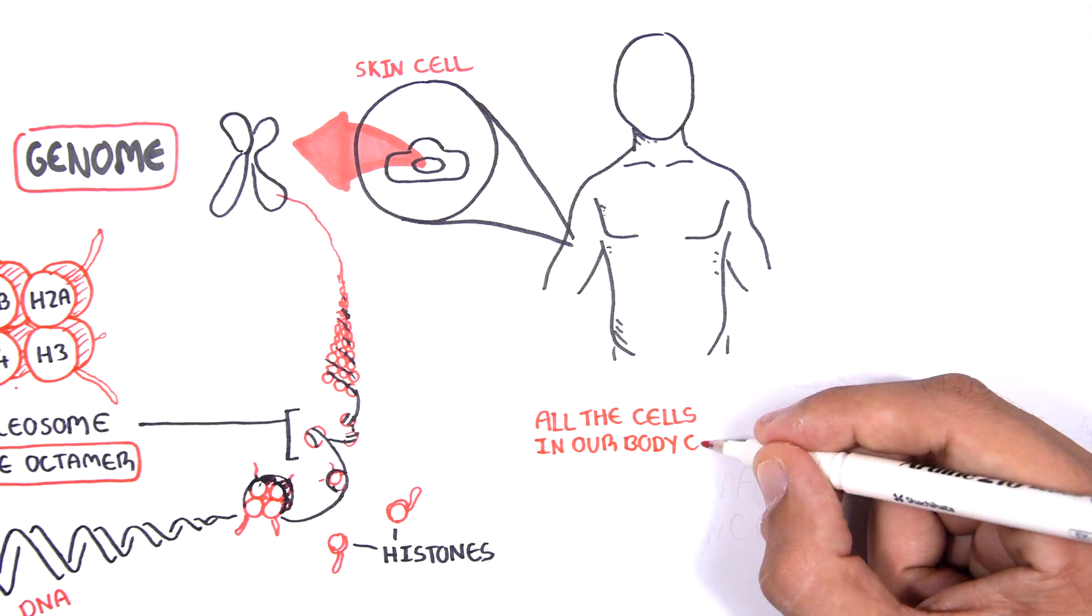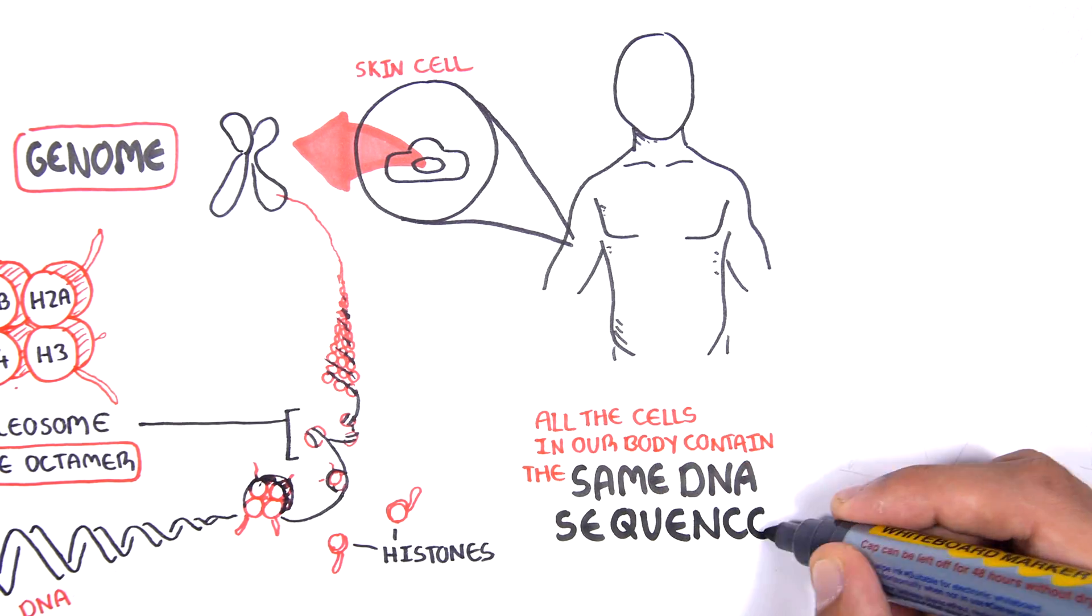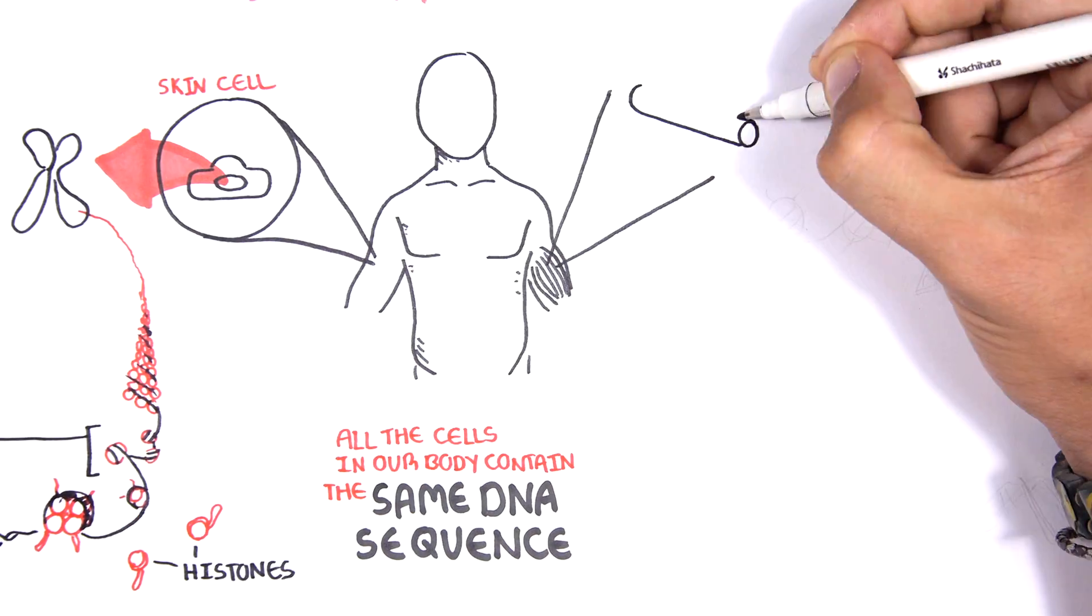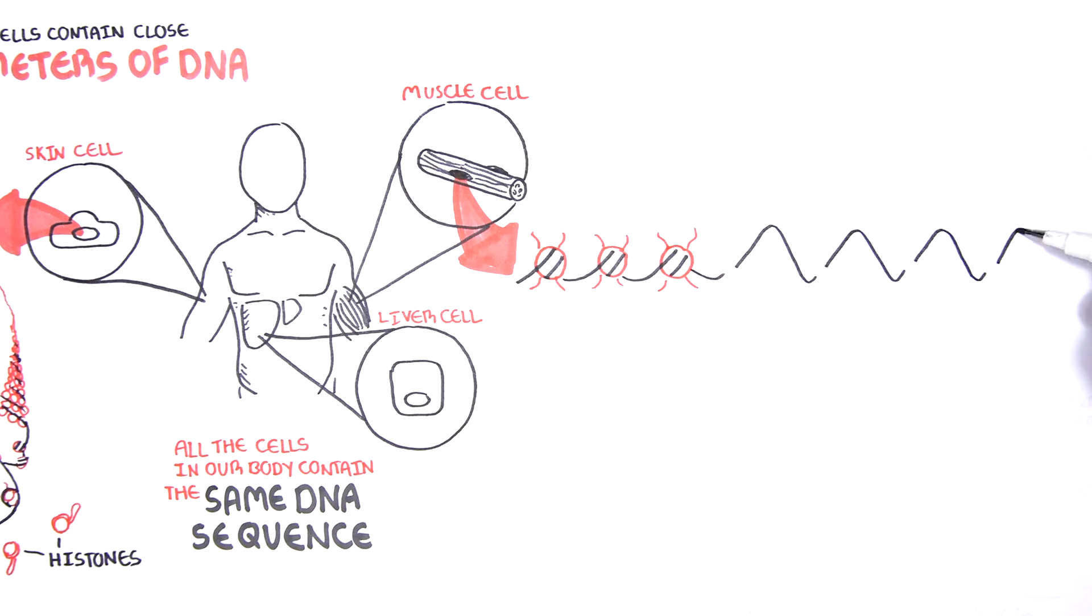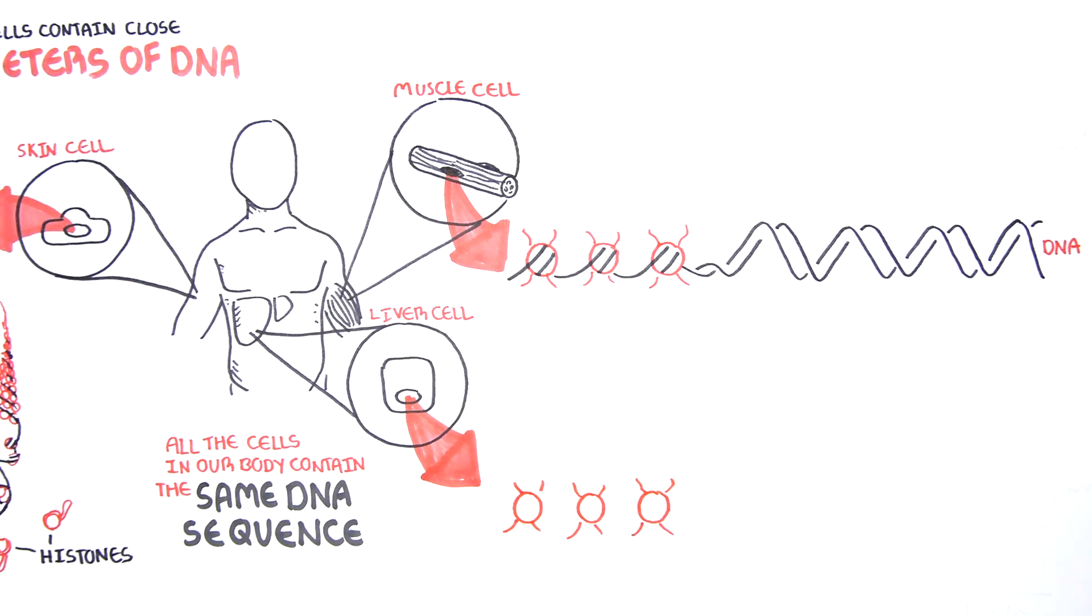All the cells in our body contain the same DNA sequence. Skin cells, muscle cells, and liver cells contain the same DNA sequence. Yet all these cells have different structures and functions. The reason is that different cells only use or express certain genes.